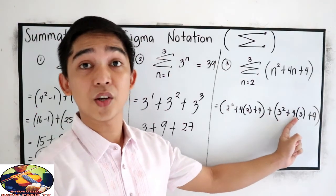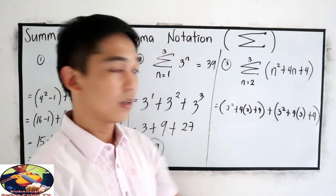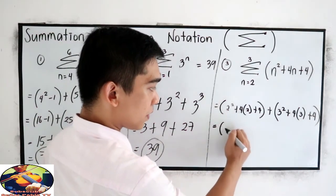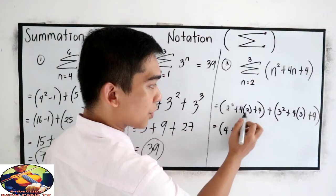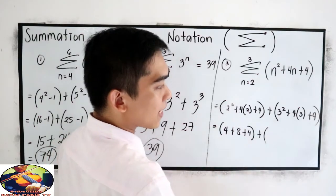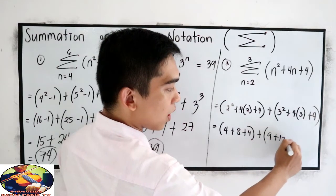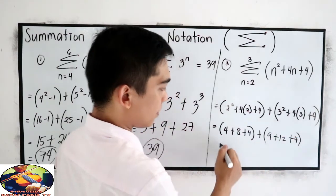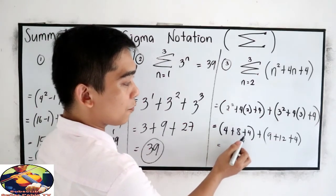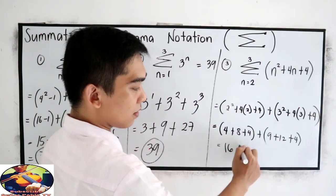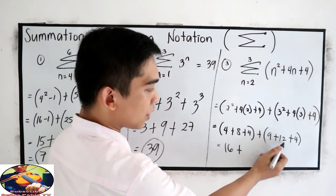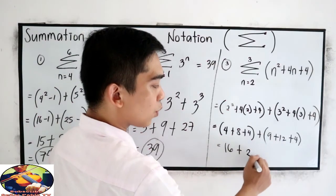Always check your substitution. 2 squared, that is 4, plus 4 times 2, 8, plus 4. Plus 3 squared, 9, plus 12, plus 4. 4 plus 8, that is 12, plus 4 equals 16. Plus 9 plus 12, 21, plus 4, 25.